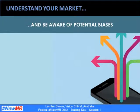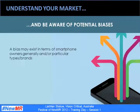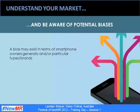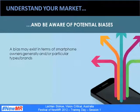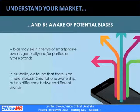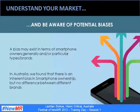You need to understand the market you're researching and be aware of any potential biases that exist. Consider at the very start of your design process any biases in terms of smartphone owners generally, or particular brands or types of smartphone that could impact your data. Sometimes these may work in your favour in finding people difficult to reach through other mechanisms, but other times they may work against you. In Australia, we found an inherent bias in smartphone ownership generally, but no difference between different brands — a lot of this is age and life stage related.